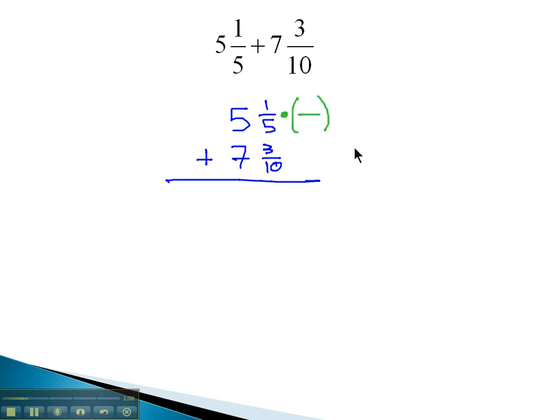So, the first fraction with a denominator of 5 needs to be multiplied by 2. This gives us 2 tenths. The second fraction is already 3 tenths, already has the denominator we want, so we're ready to add it to the 2 tenths. 2 tenths plus 3 tenths is 5 tenths.